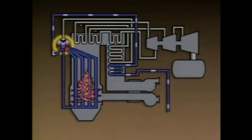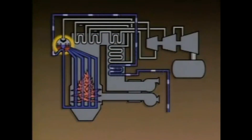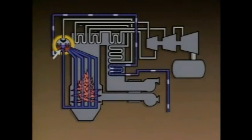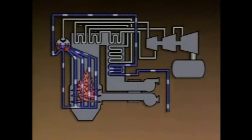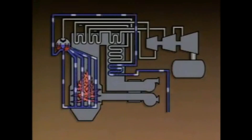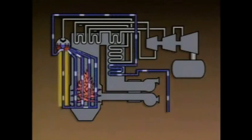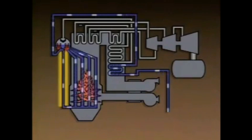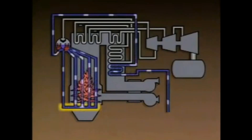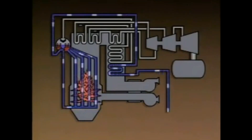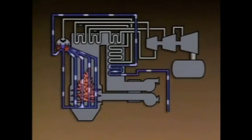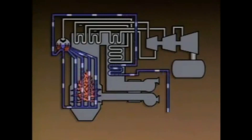In this boiler, the heated feed water flows from the economizer and enters the bottom part of the boiler drum through the feed water inlet. The water continually circulates within the boiler through the downcomers, the lower headers, and the boiler tubes. A boiler typically has two or more downcomers and two or more headers. However, for clarity, this illustration shows only one of each.